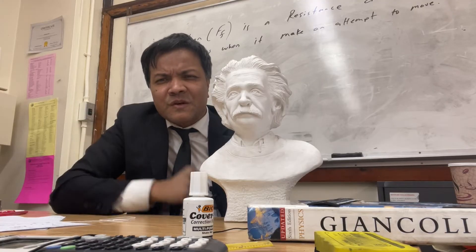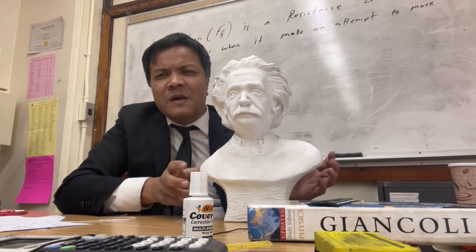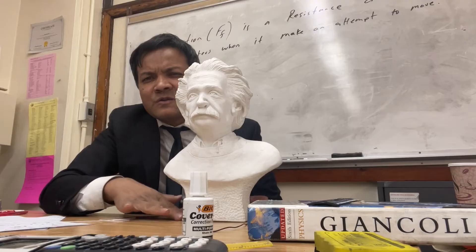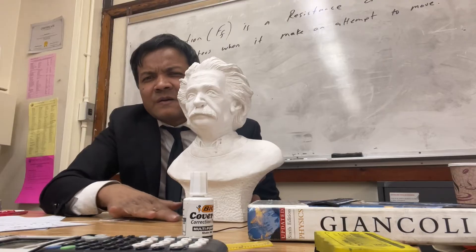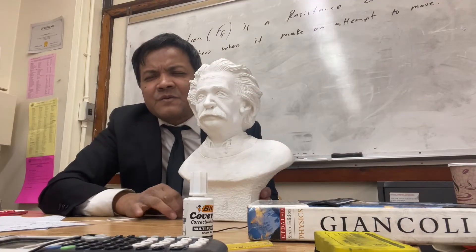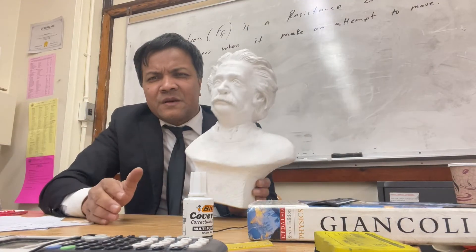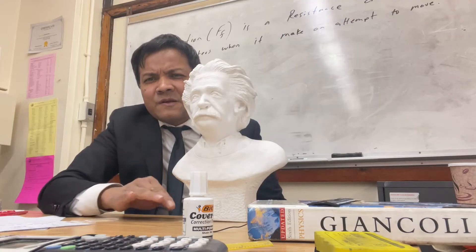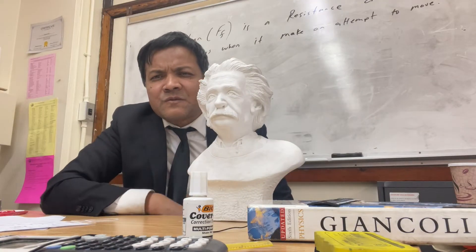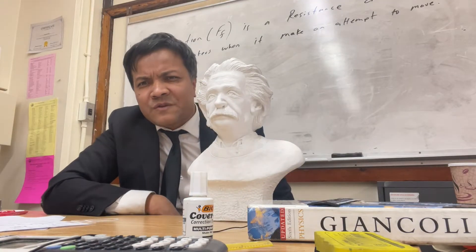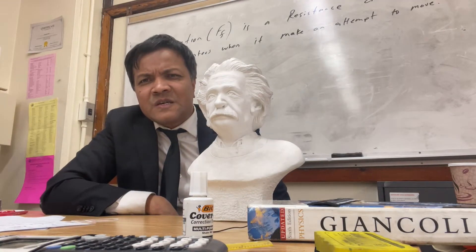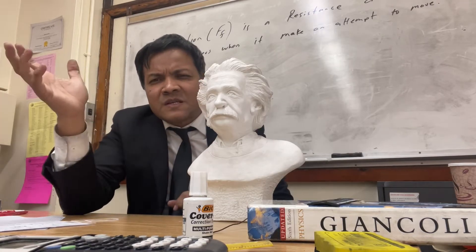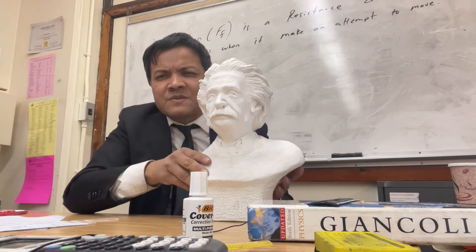What is friction? Friction is a contact force. For example, Albert Einstein's statue is now sitting on the table, so there is contact. If you remove him, there is no contact. If you put him back, there is contact. So friction is a contact force. There are two types of friction: one is static friction, when an object is at rest; one is kinetic friction, when an object is in motion.